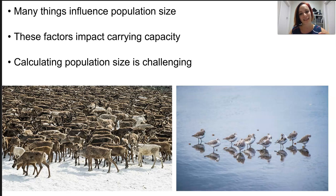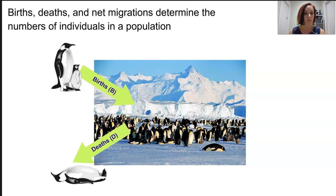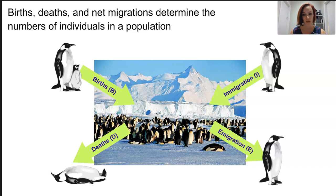Calculating population size is really challenging due to the constant fluctuations in population size, but also the logistics of actually counting live organisms. We calculate population growth rate using four considerations: births, deaths, immigration, and emigration. Immigration is the movement into a location, emigration is the movement out of the location.